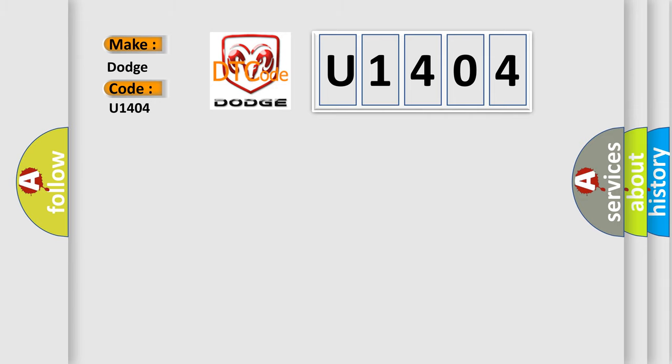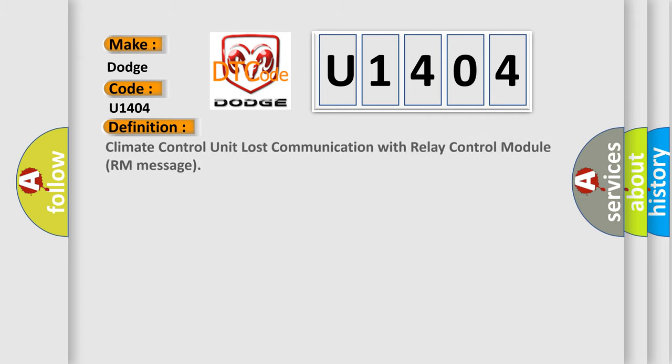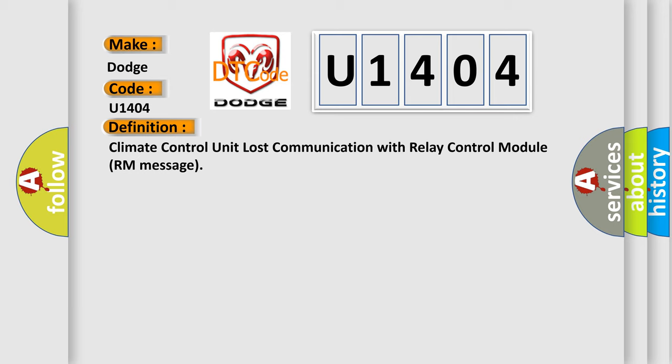The basic definition is: Climate control unit lost communication with relay control module room message. Here is a short description of this DTC code.